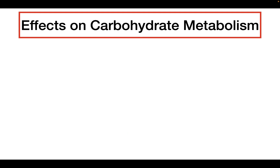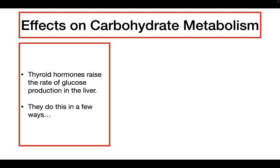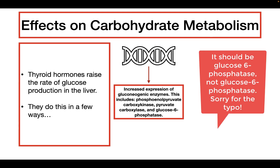Now let's talk about the effects of thyroid hormone on carbohydrate metabolism. The main effect is that thyroid hormone is going to raise the rate of glucose production in the liver. The first way is that thyroid hormone can increase the transcription or genetic expression of gluconeogenic enzymes. Remember that gluconeogenesis is a series of reactions that produces glucose, so if you increase the expression of specific gluconeogenic enzymes, you're also going to increase gluconeogenesis in the liver. Thyroid hormone increases the expression of three different enzymes.